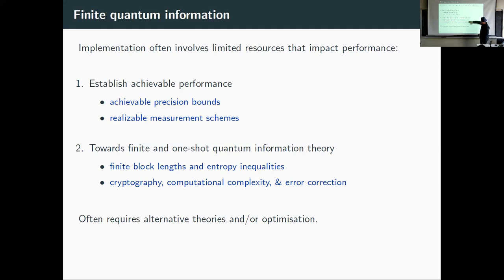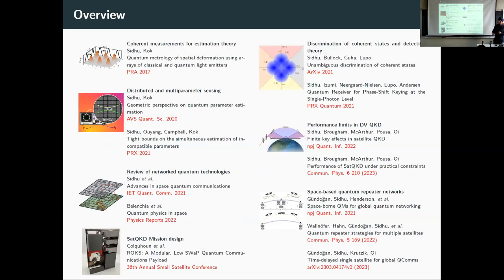Generally, finite quantum information is the transition from asymptotic to finite and one-shot quantum information theory. It involves finite block lengths and entropy inequalities, useful for cryptography, computational complexity, and error correction. This typically requires either an alternative theoretical construction built from the ground up encoding the limited resource condition, or adding extra constraints to optimizations that account for limited resources. Today's talk will cover performance limits in discrete variable QKD — starting with how we model satellite QKD, then extending to space-based quantum repeater architectures.